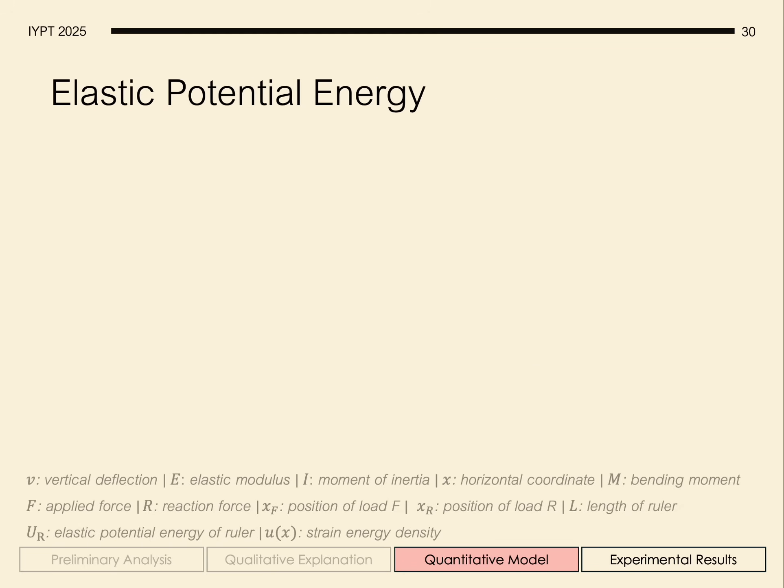And so from the deflection equation, we can use the known relationship between the deflection and potential energy to calculate the total stored elastic potential energy in our rulers. Since our deflection equation is a piecewise function, we rewrite it in terms of each segment of the ruler.